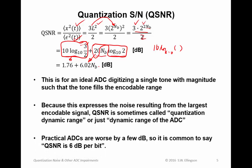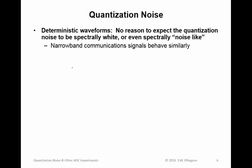Now this is for an ideal analog-to-digital converter, digitizing a single tone with magnitude such that the tone fills the maximum encodable range. Because this expresses the noise resulting from the largest encodable signal, quantization signal-to-noise ratio is sometimes called quantization dynamic range, or just the dynamic range of the ADC. Practical ADCs are usually worse by a few dB. So it's common to say that the quantization signal-to-noise ratio is 6 dB per bit.